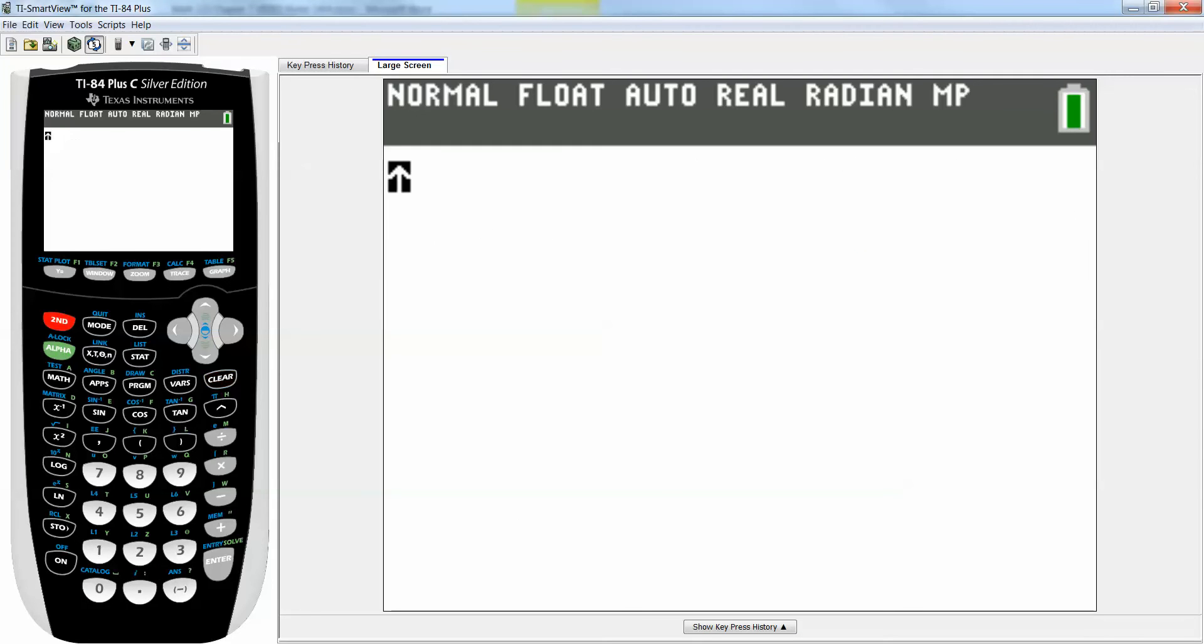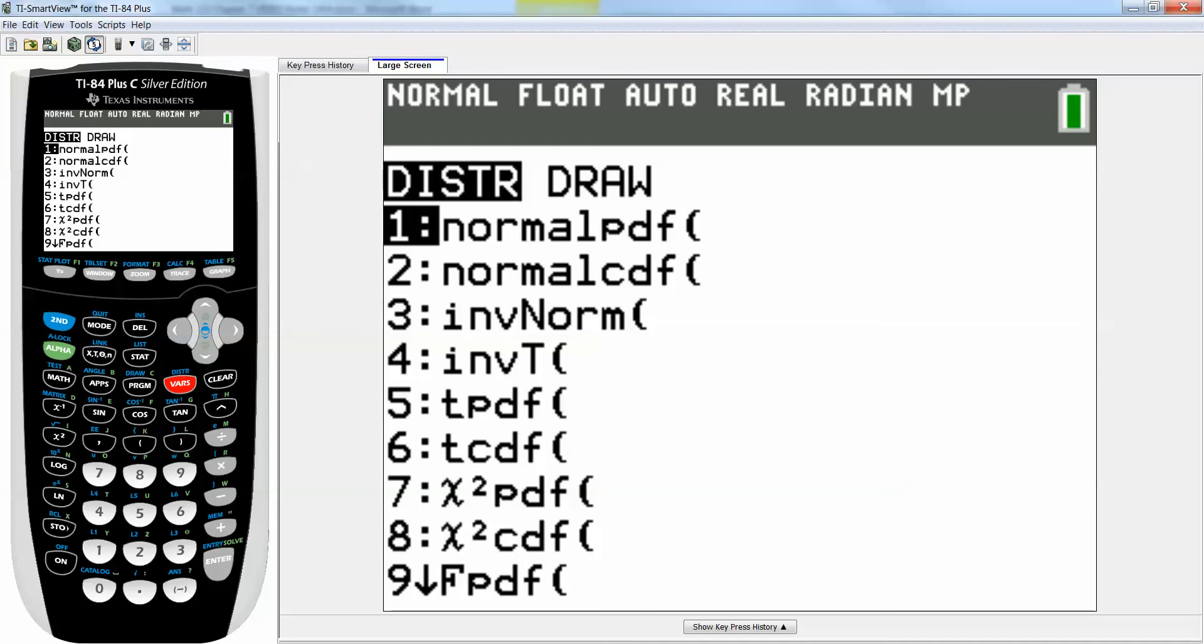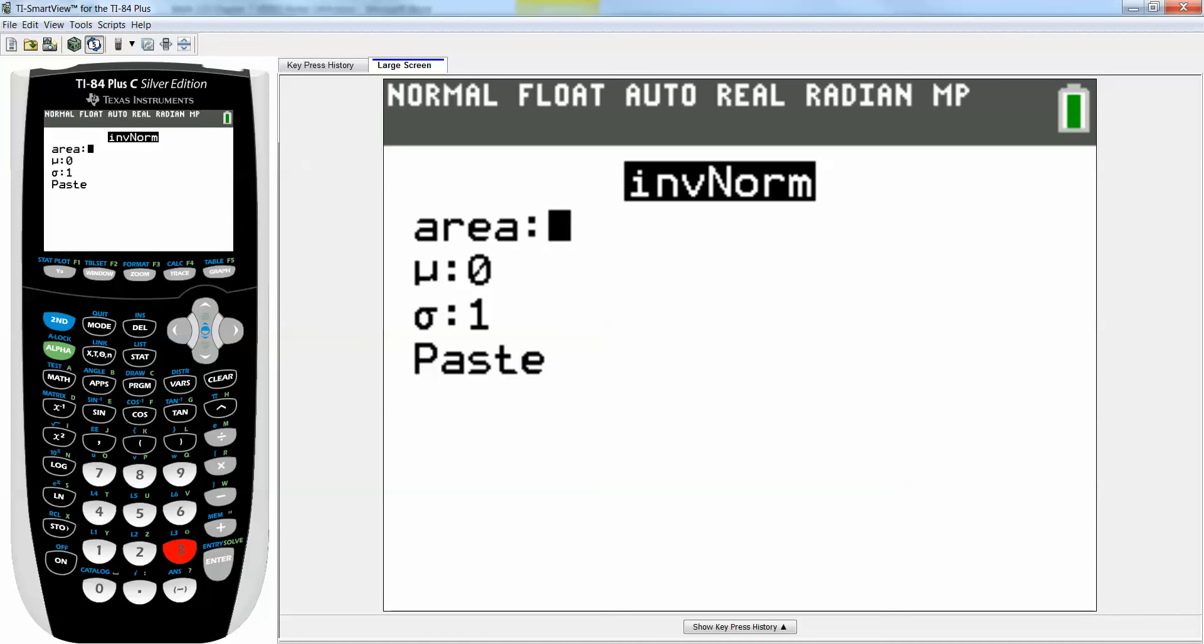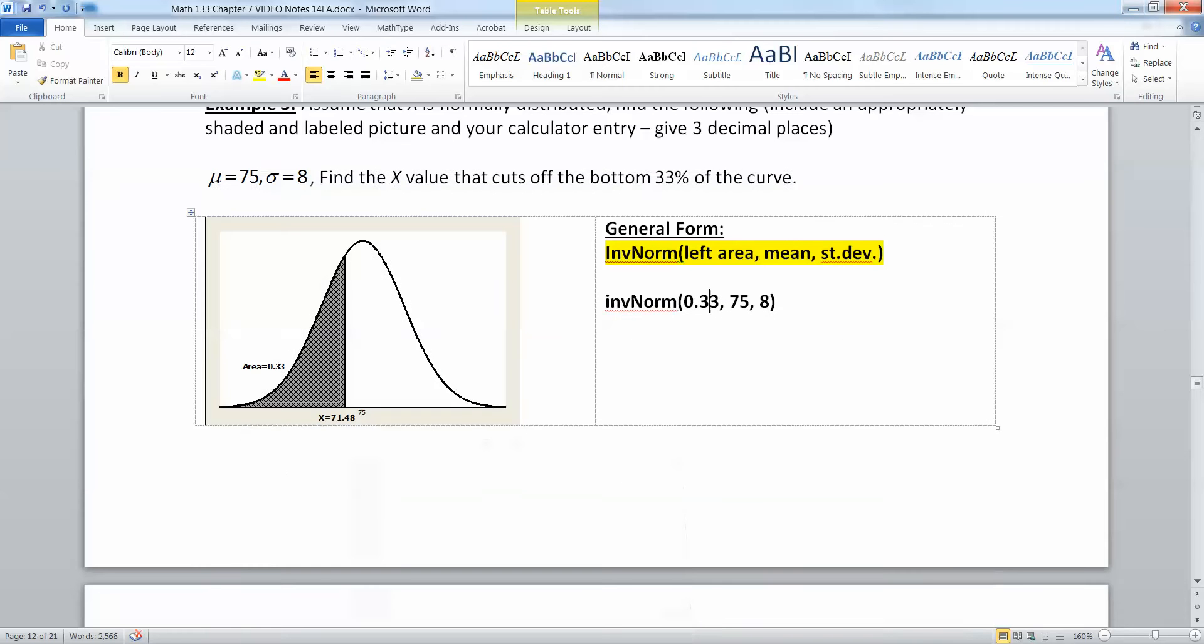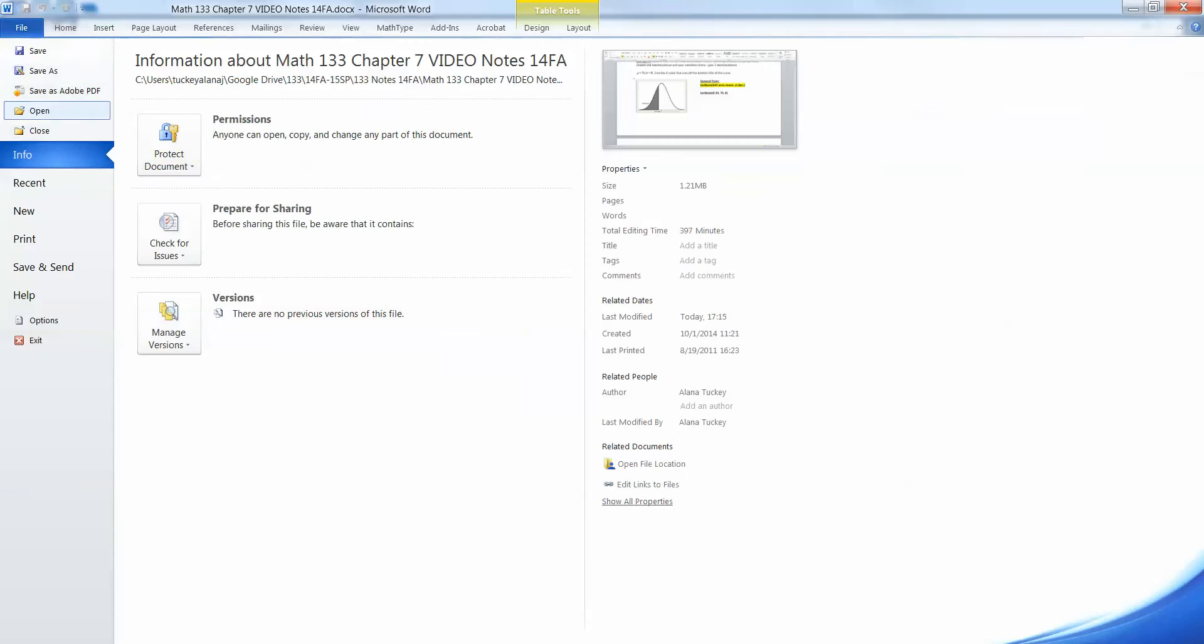clear this out, and you find inverse norm in the same place you found normal CDF. It's right there, it's number 3, inverse norm. So my area is 0.33. My mean was 75, and my standard deviation was 8. And I press enter, and then I press enter. And it tells me that it believes it's 71.48, which is what it is. So this would be my x value.